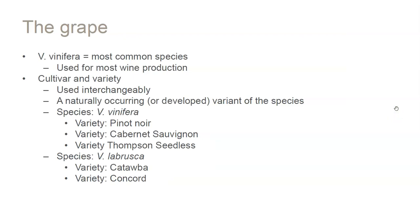Vinifera is easily the most commonly used grape for wine production around the world. About 50% of all grapes are used for wine production, the remainder being used for juices and value-added products, with very little fruit actually being used for fresh consumption because of storage issues. Cultivar and variety are used interchangeably in our industry, but cultivar is actually what we're growing — a cultivated variety. Variety is actually the wild species itself.